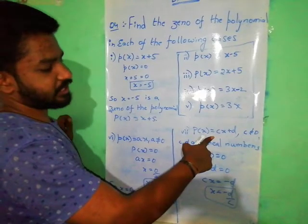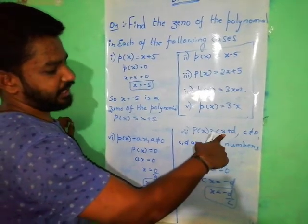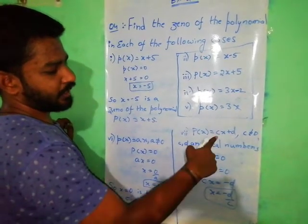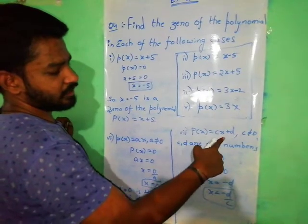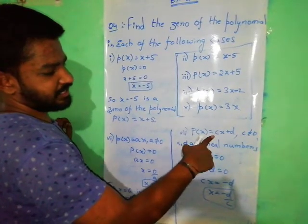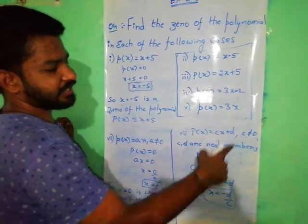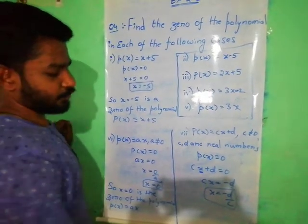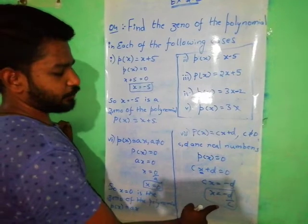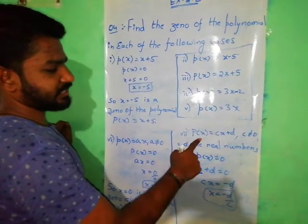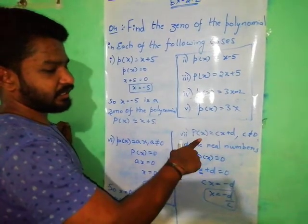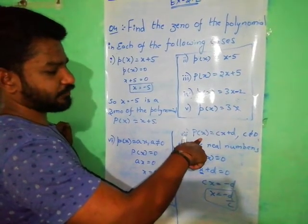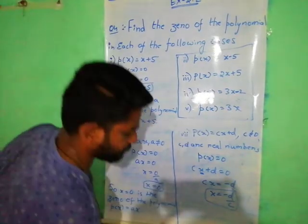If we substitute x is equal to minus D by C: C gets cancelled, and minus D plus D becomes 0. So x is equal to minus D by C is confirmed as the zero of the polynomial P of x is equal to Cx plus D.